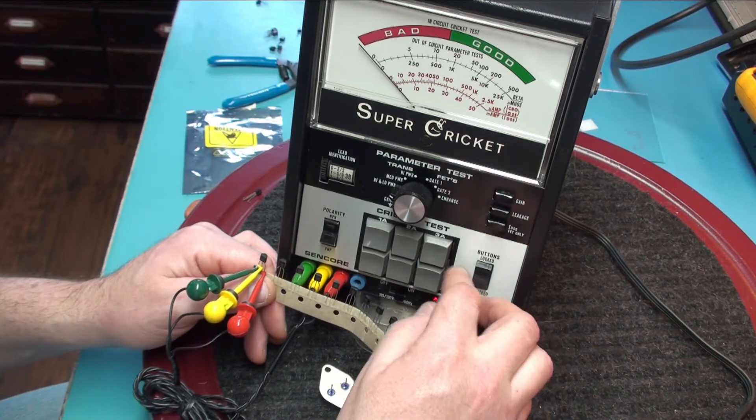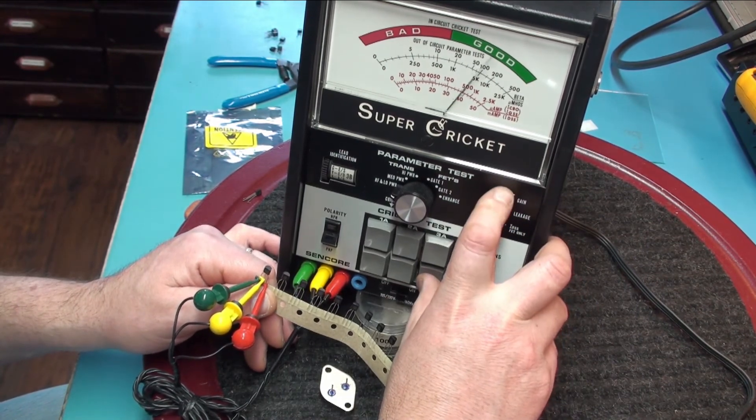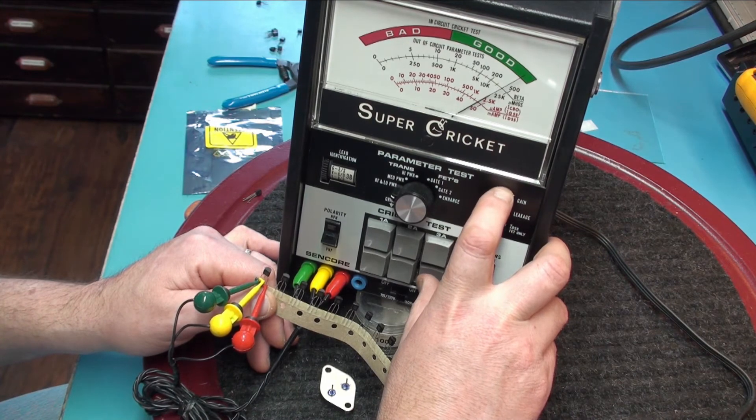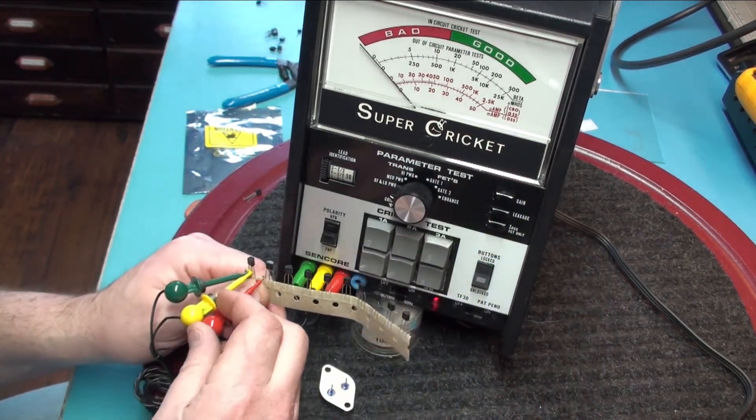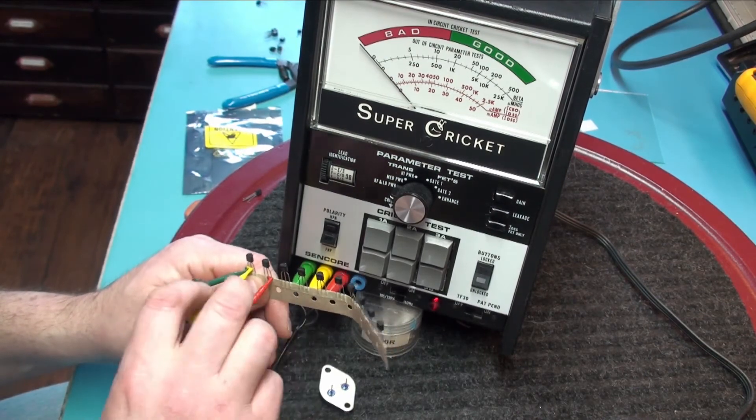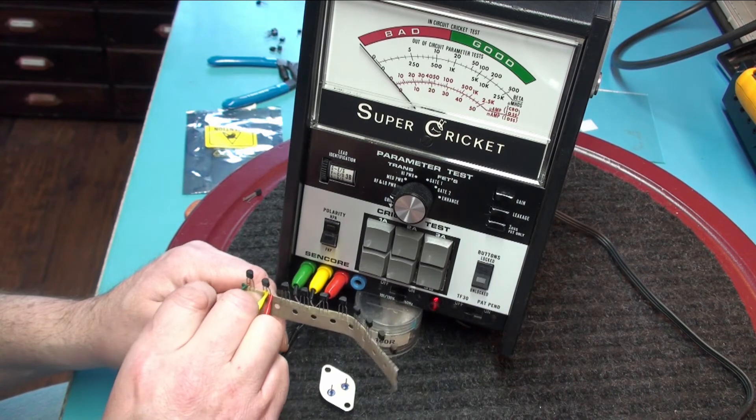But we want to match gains. So at least now I know that my gain testing is going to be done on 3B. So I will just lock that button in. So now we are going to switch over to the next transistor. Hook the leads up in the same manner, same color scheme.